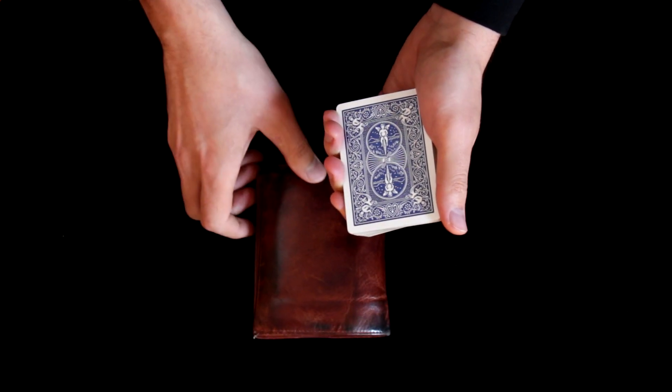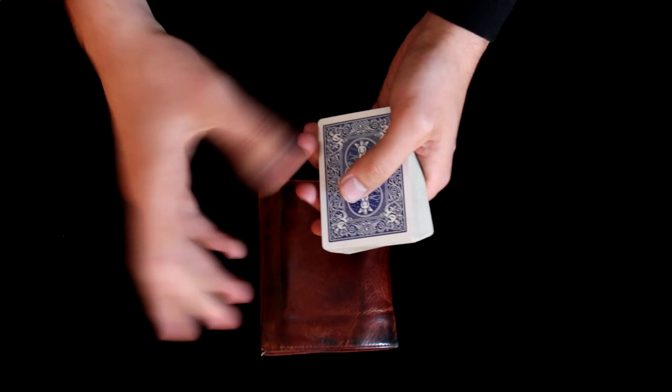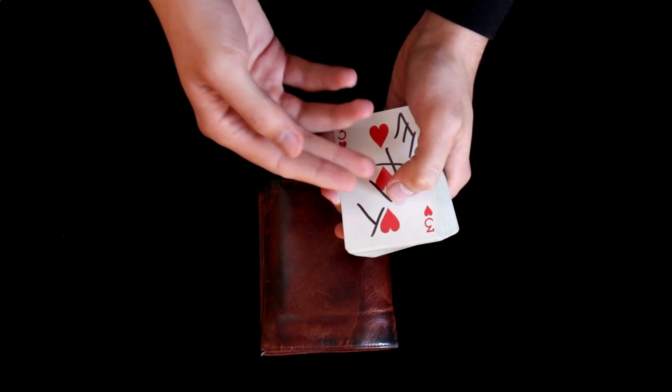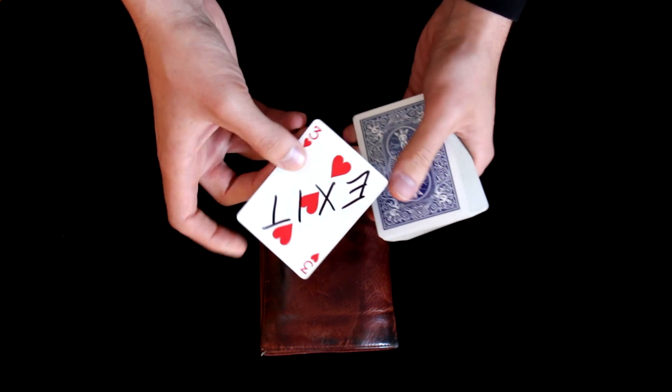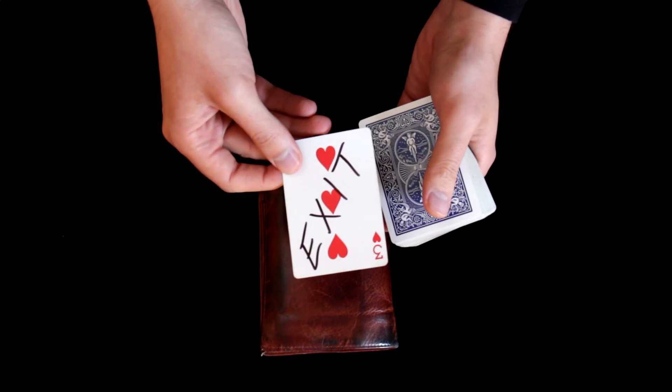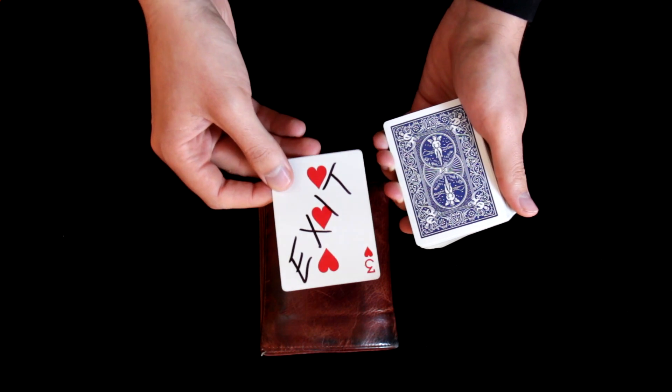Now the last thing is to perform the double lift, so again, now you know how to do it. So let's turn over two cards as one, and now you can show to the spectator that it was his card that was inside your wallet.